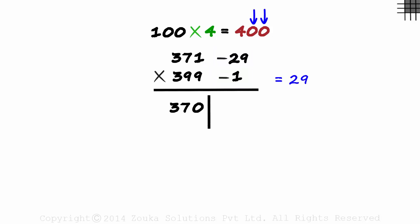As we have two zeros in the base, we need to have two digits on the right. So we write a 29 here. This is not our answer.